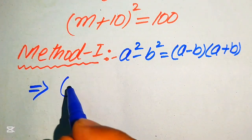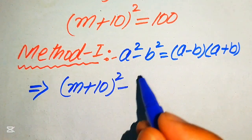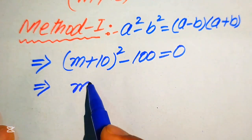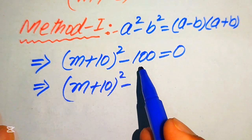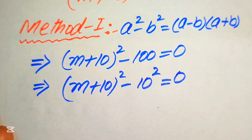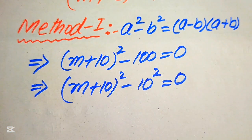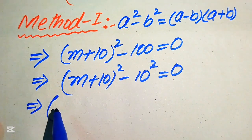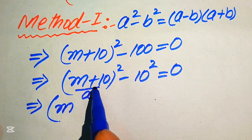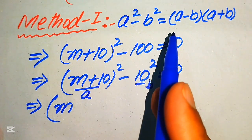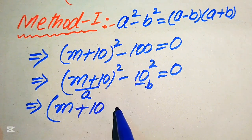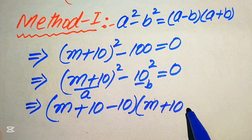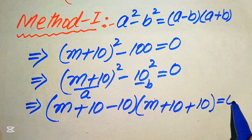We move 100 to the left-hand side, giving us (m + 10)² - 100 = 0. We know that 100 = 10², so we apply the difference of squares formula. This gives us (a - b)(a + b) where a = (m + 10) and b = 10, written as [(m + 10) - 10][(m + 10) + 10] = 0.